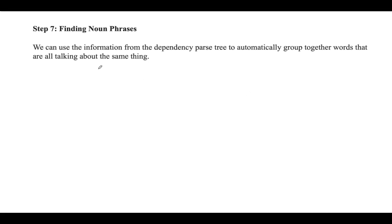Coming to the next step — finding noun phrases. We need to find out noun phrases in the given sentence. We can use information from the dependency parse tree in order to group together words that are talking about the same thing — you need to group the words which are related to each other, using the dependency parse tree to help.